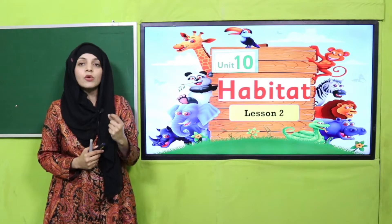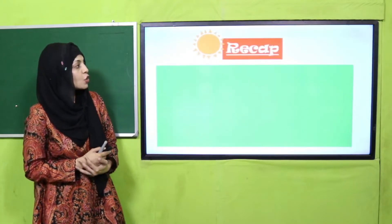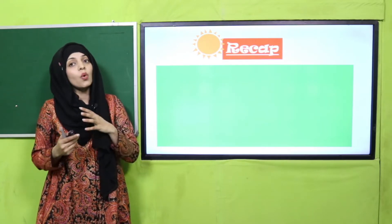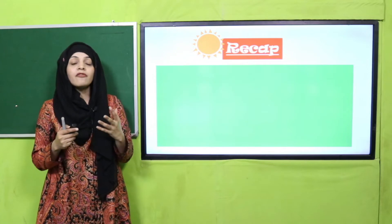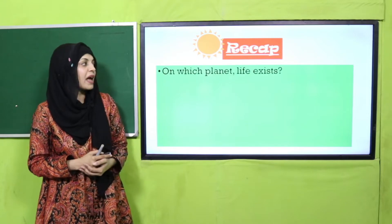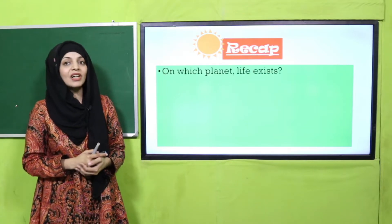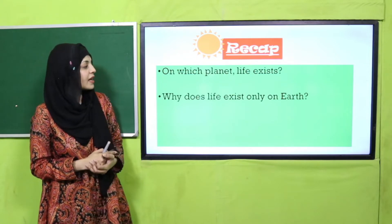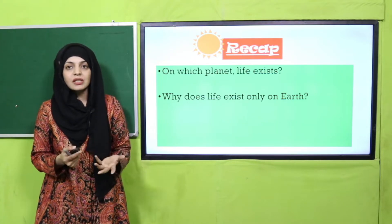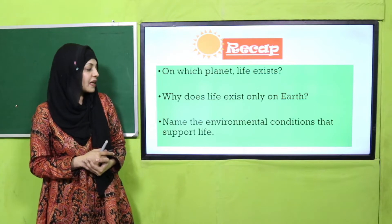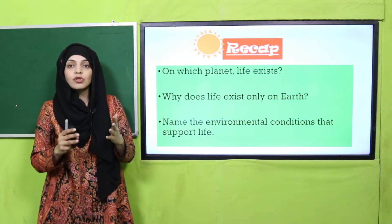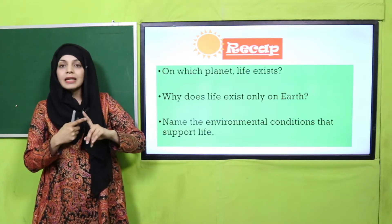Before moving on towards the main lesson, let's quickly recap what we did in the previous lesson. We discussed that the sun supports life on earth, and earth is the only planet where life is possible. Quickly answer: on which planet does life exist? Excellent — Earth. Why does life exist only on Earth? Because of suitable conditions. Name the environmental conditions that support life, like sunlight, heat, and water.